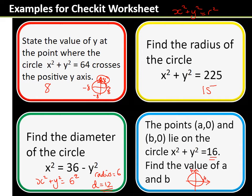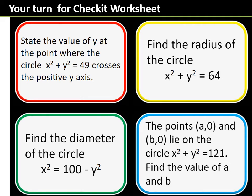This last one is where people found it a little bit trickier. The radius of the circle is 4, so it crosses at 4, 4, −4, −4. We're trying to find the x-coordinates where y = 0 — that's here and here on the circle — so a = plus or minus 4. Looking at the next one: the y-coordinate is 0 on both points, so a and b are plus and minus 4 — one's positive, one's negative.